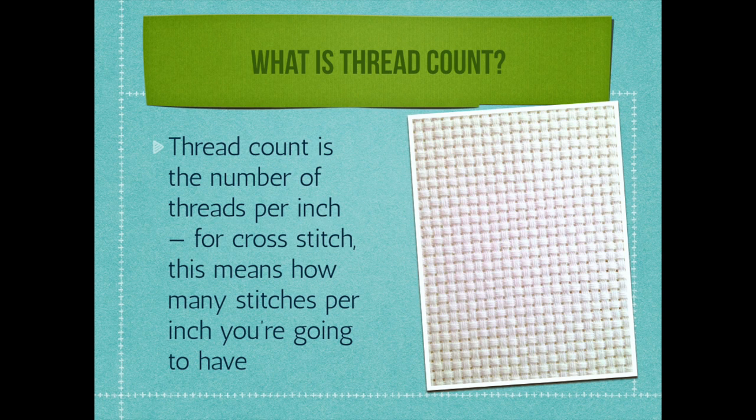I see this question come up all the time in cross stitch groups — people cannot figure it out. And yes, there are apps out there that can figure this out for you, but wouldn't you like to know how to do this yourself so you don't have to rely on an app? Especially if you're in a fabric store and you see some amazing fabric and you don't happen to have your app with you — this way you can figure this out on your own and you're going to look like a massive smarty pants.